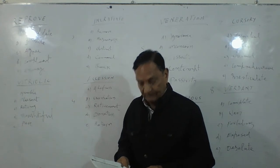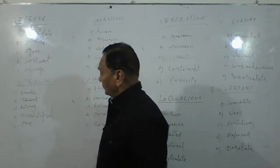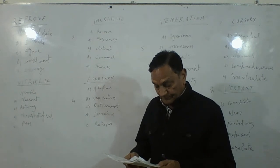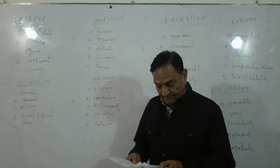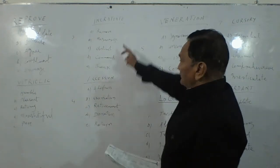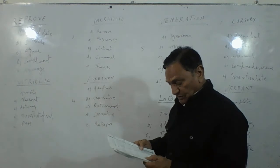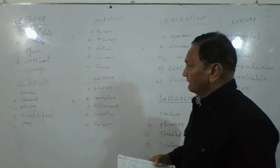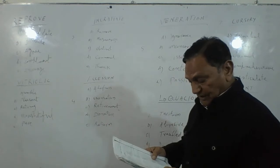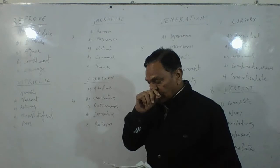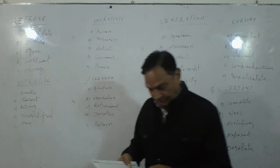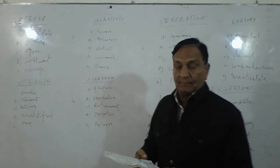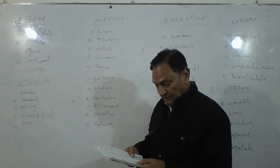The next question: INGRATIATE — I-N-G-R-A-T-I-A-T-E — ingratiate. We have five options. Option A: Remove. Option B: Mesmerize. Option C: Obstruct. Option D: Command. Option E: Intent.